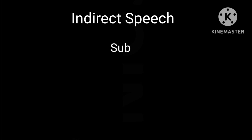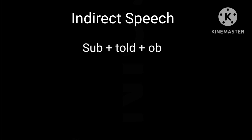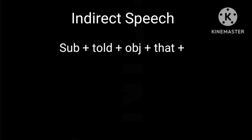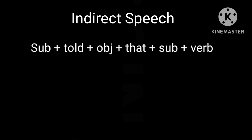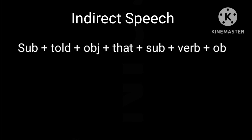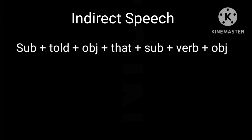Let's see the process of making an indirect speech sentence. First, subject, then told, then object, then that, then subject, then verb, then object.